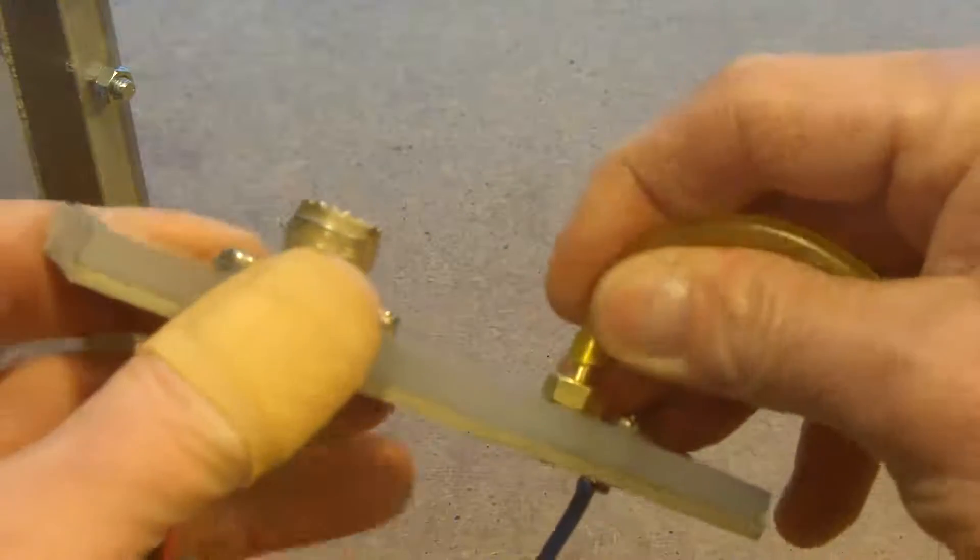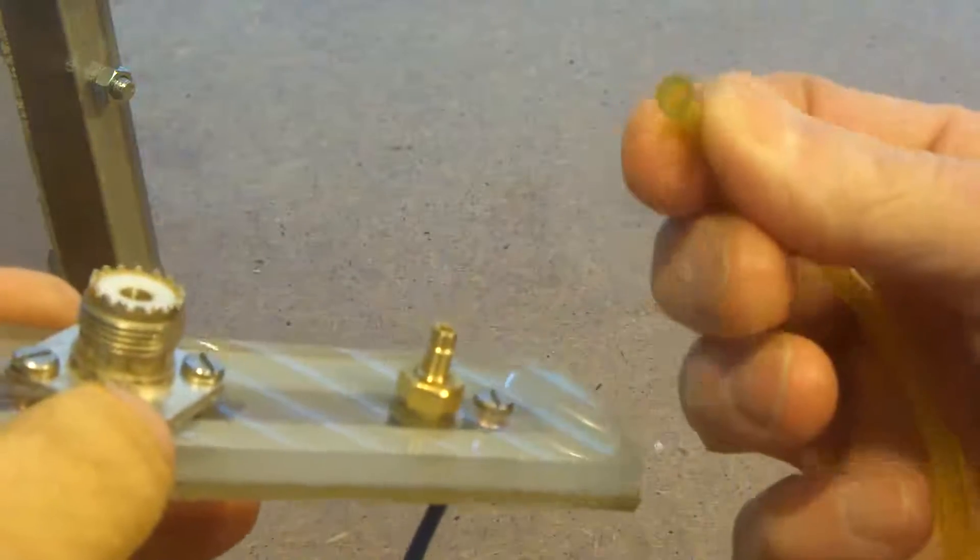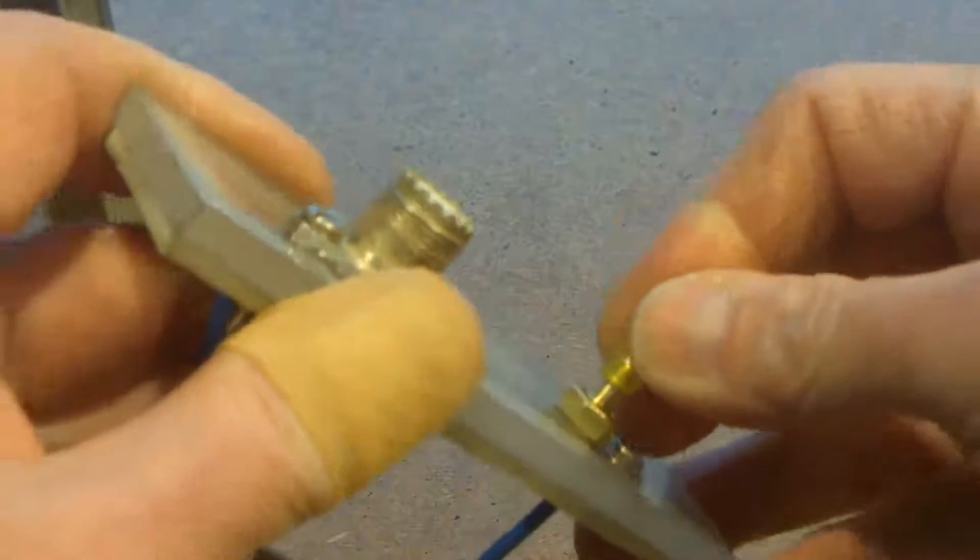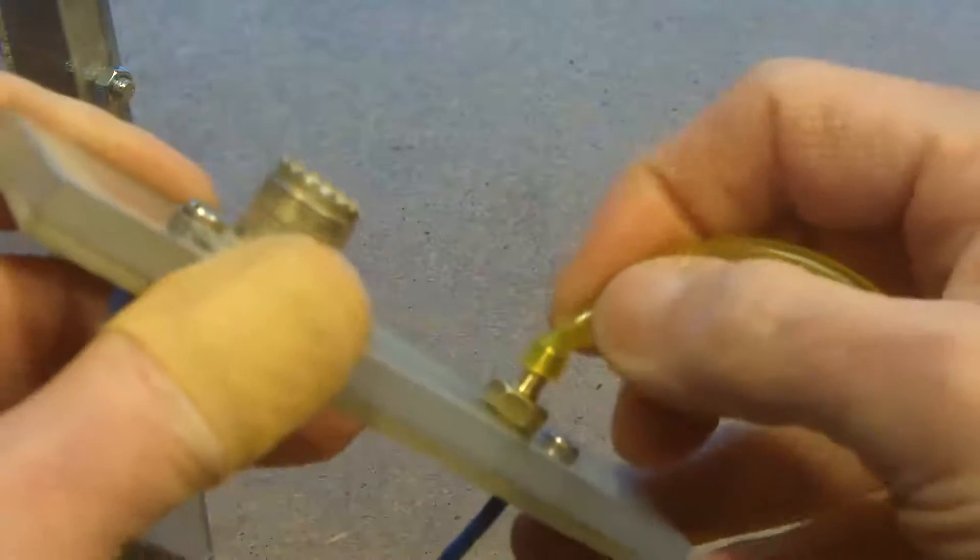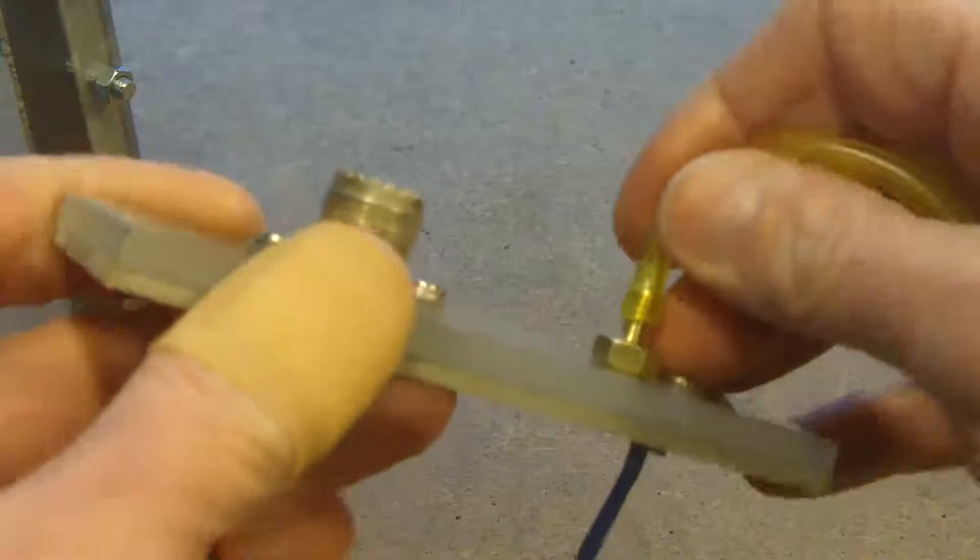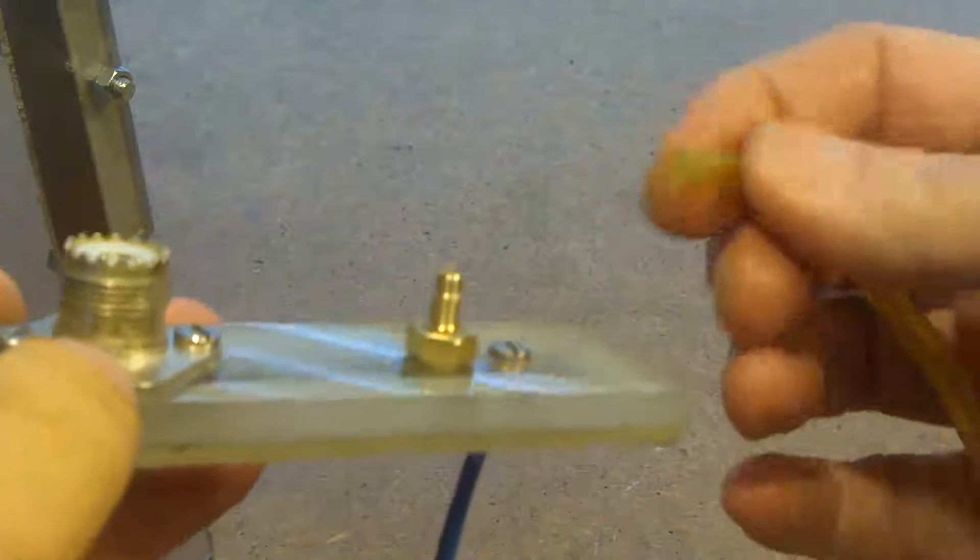Oh by the way, remember I made that larger nipple, well the yellow hose stretches enough to go onto there without any problem, so I didn't have to make a reducer. I could have been worrying about something that I didn't need to worry about, so I just went for it. So that's just a little update.